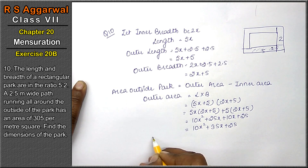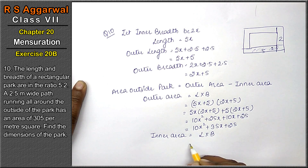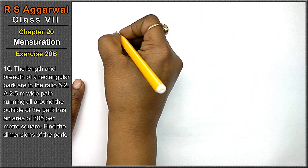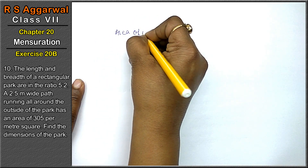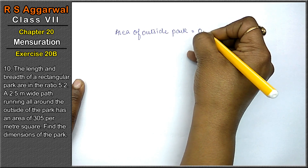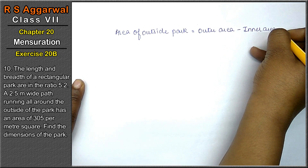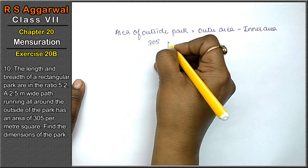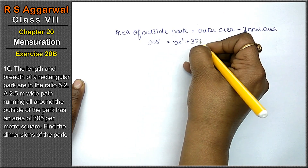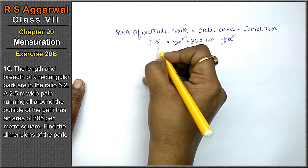Inner area = inner length × inner breadth = 5x × 2x = 10x². Area outside the park = outer area minus inner area = (10x² + 35x + 25) minus 10x². The 10x² terms cancel, leaving 35x + 25.